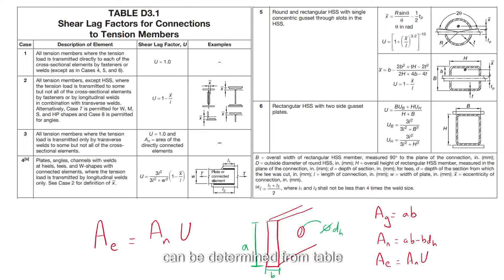This factor can be determined from table d3.1 from the AISC specifications chapter D and shown on the screen.